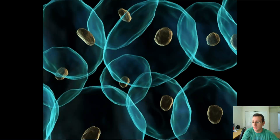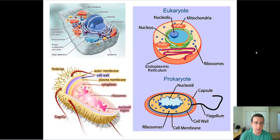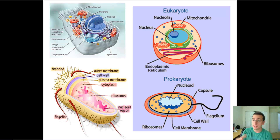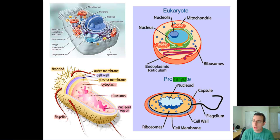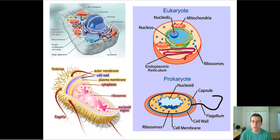There are two major kinds of cell: prokaryotic or eukaryotic cells. The term 'pro' means before — like a prototype, the type that comes before. 'Karyo' in biology means DNA or genetic material, or more accurately, nucleus. So 'prokaryo' means before you have the nucleus — it's a type of cell before there was a nucleus.